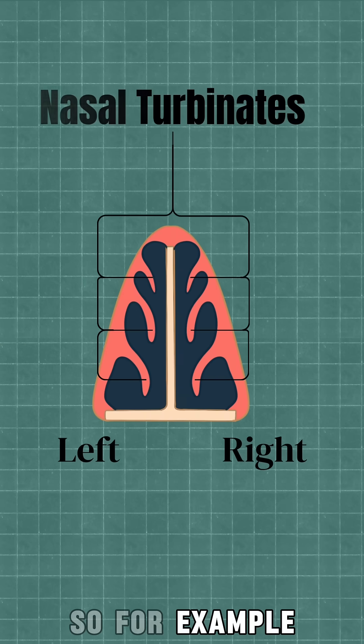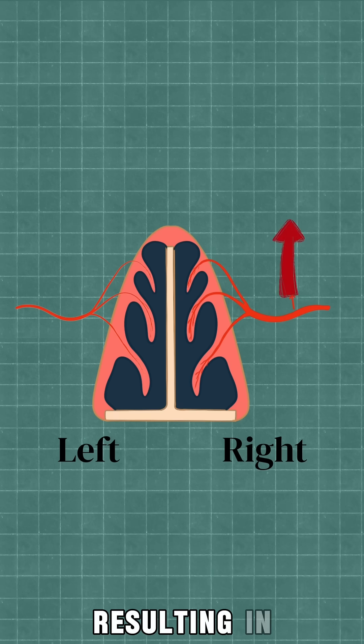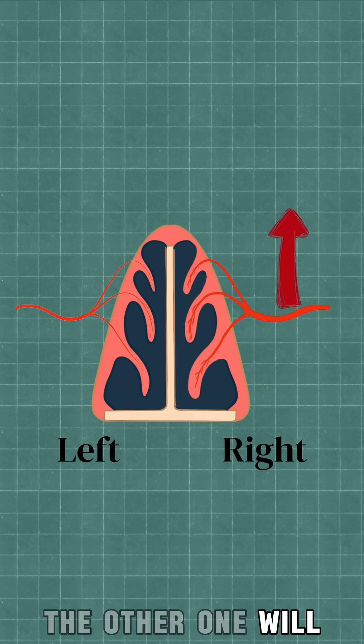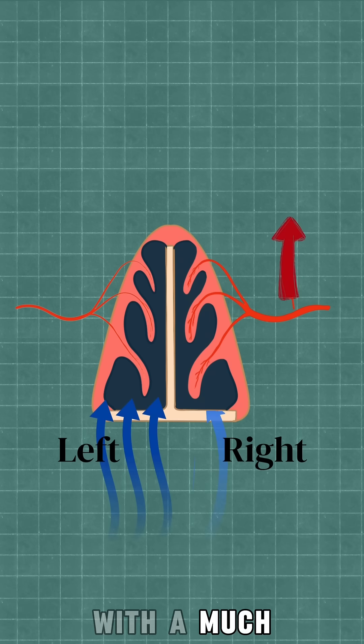So for example, if your right nostril has increased blood flow resulting in slight congestion, the other one will open up for easier breathing with a much smaller amount of air passing through the right one.